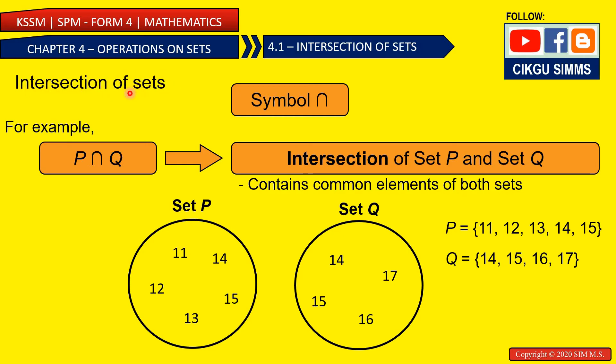So first, the intersection of sets is denoted using this symbol, which is like an N. For example, set P and set Q means that this is the intersection of set P and set Q. So what is intersection? Intersections means they contain common elements of both sets, which are P and Q.